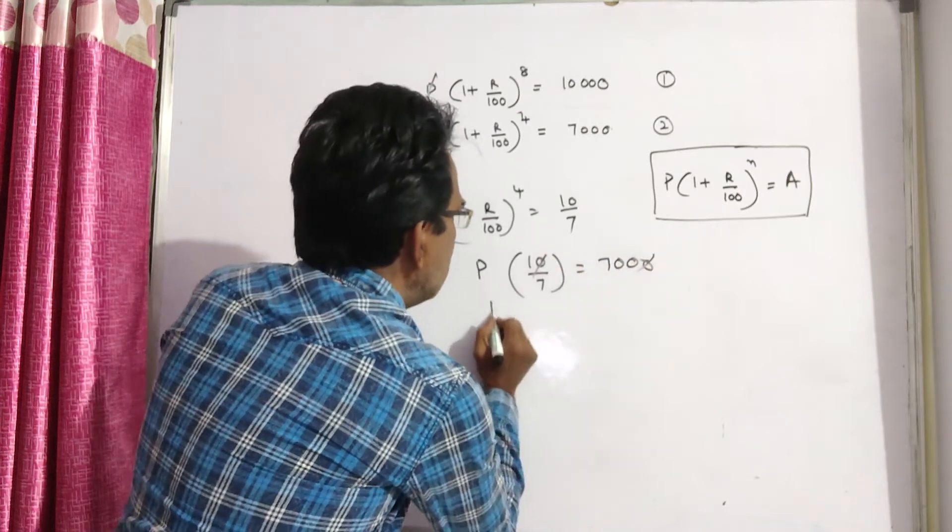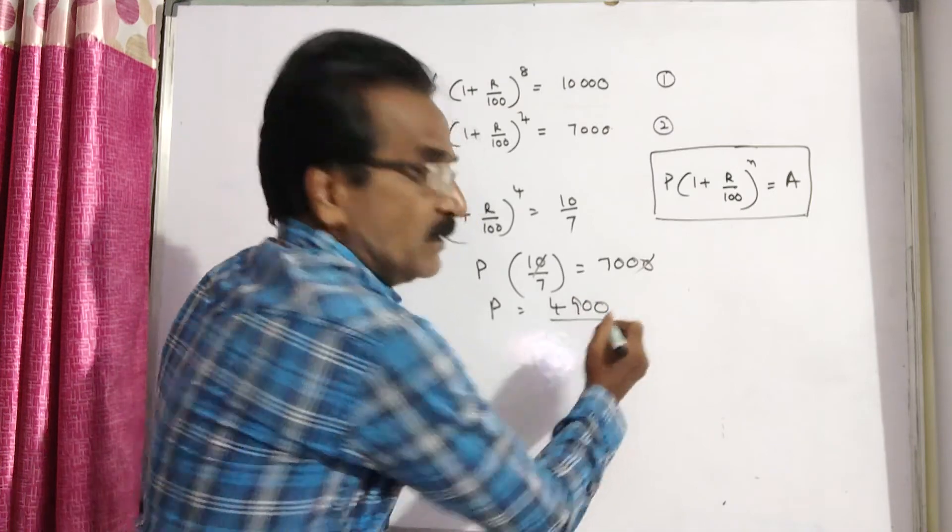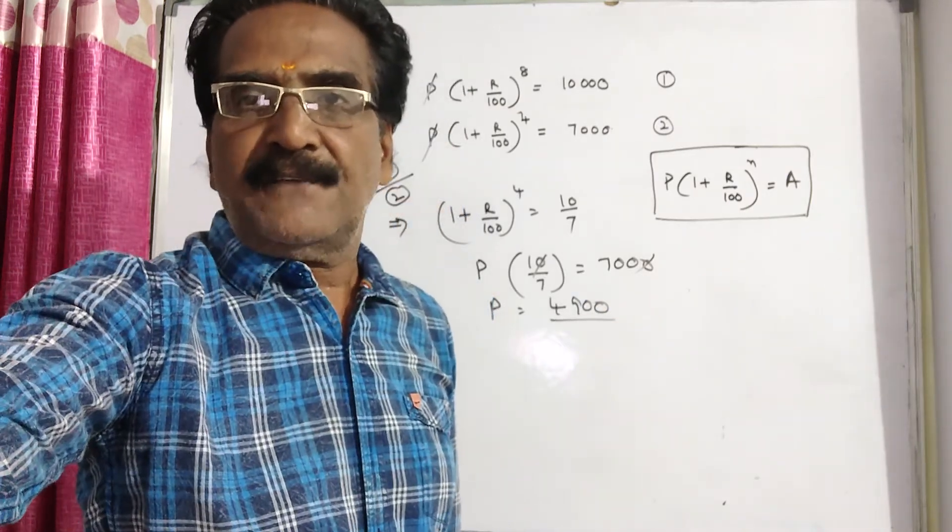So, P is equal to 7 times 7, which is 49. 4,900 is your answer. Okay friends, thank you.